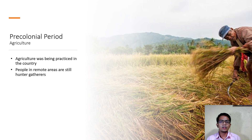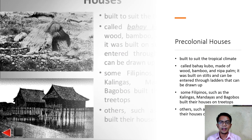During the pre-colonial period, agriculture was practiced throughout the country. Filipinos were growing crops, raising animals, and producing wine, vinegar, salt, and bee products. However, in more remote areas, Filipinos were still hunter-gatherers. People during this time lived in wood, bamboo, and nipa houses called bahay kubo, while others made their houses on treetops.